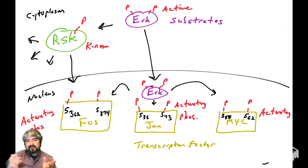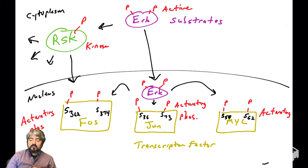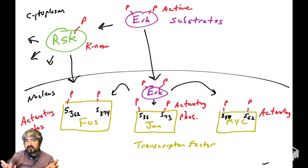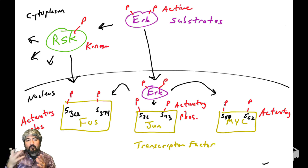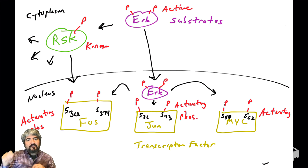Now we've got three fully active transcription factors that are going to turn on genes that will push the cell into S phase. But these transcription factors are very important, so we really need a lot of them. If we're getting the signal to go through into the cell cycle and make more cells, we really need lots of these transcription factors. So how do we make transcription factors? Transcription factors will help make transcription factors.